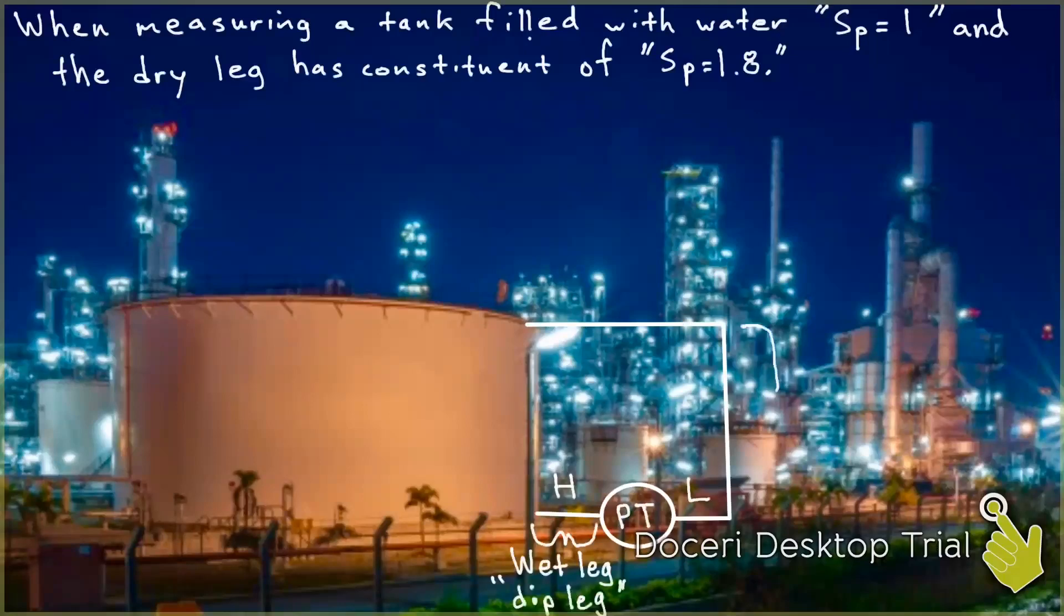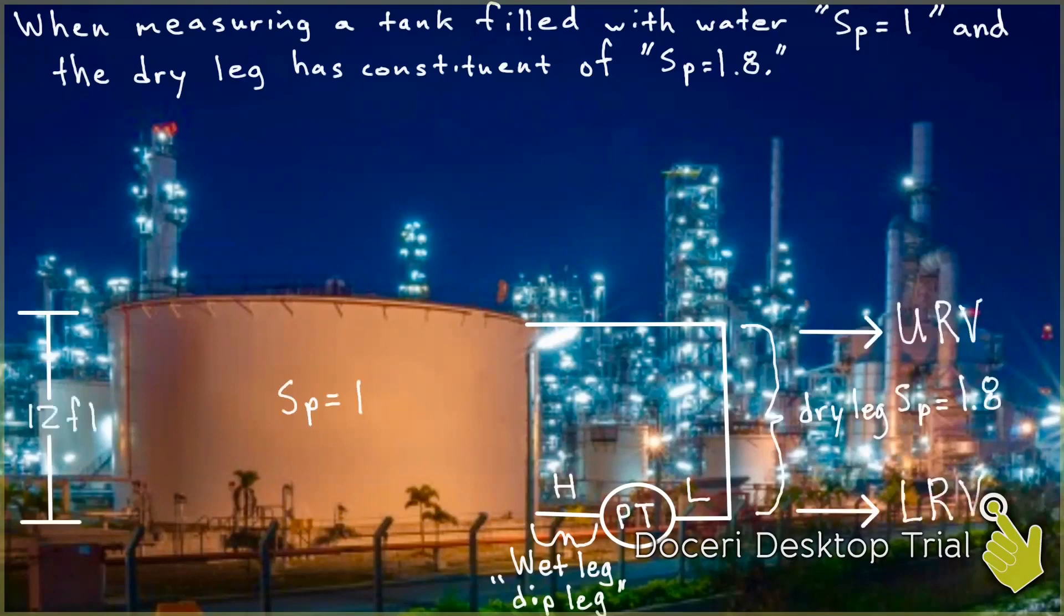we must draw everything out. So here we're going to go ahead and draw everything out. The specific gravity of 1 is what's in the tank, and the height of the tank is indicated by 12 feet. The high pressure side, which is the very bottom of the tank, has a wet leg and a dip leg.